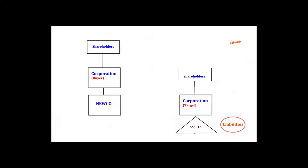In a reverse triangular merger, the buyer starts by forming a special purpose subsidiary. Let's call it NEWCO. The buyer then capitalizes NEWCO with the funds it needs to complete the acquisition.